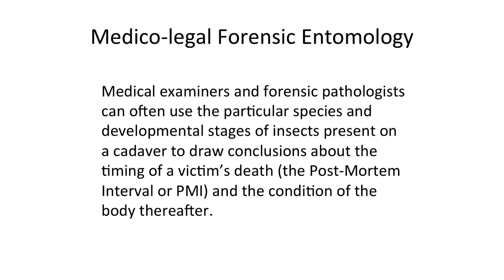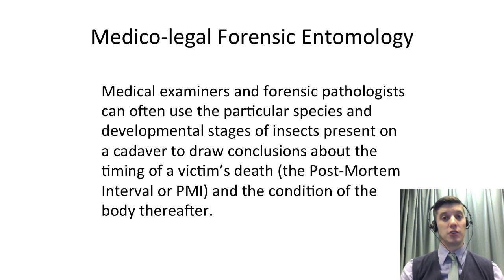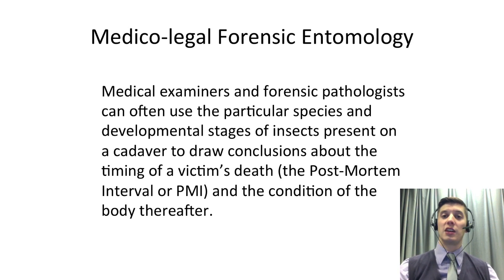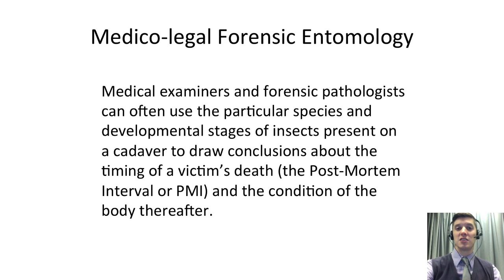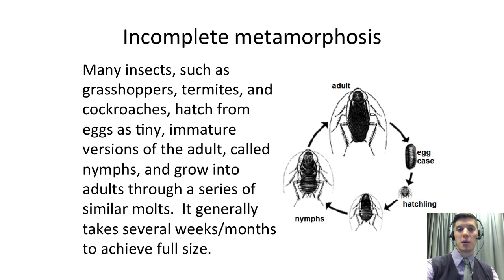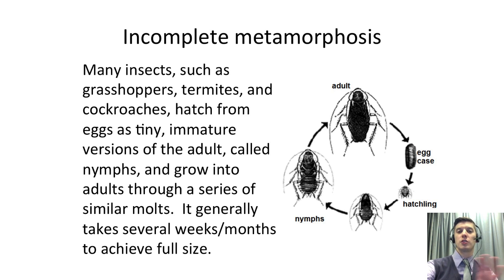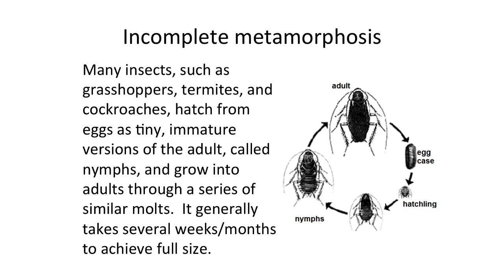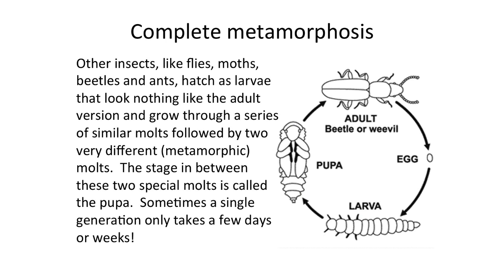Now let's get to the real meat of the story — what you normally think of when you think of forensic entomology: homicide investigations, cadavers, calculating the post-mortem interval, and the time of death. We can use insects to calculate this because insects have a characteristic development pattern. Some insects, like termites and grasshoppers and cockroaches, hatch as little versions of the adult they'll grow into and go through a series of molts resulting in just larger versions of the same thing. Other insects — the ones primarily used for forensic entomology — go through what we call complete metamorphosis, with four different life stages.